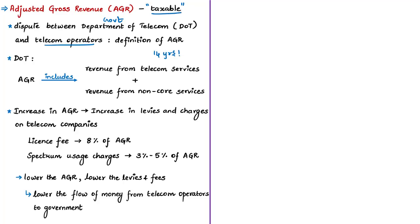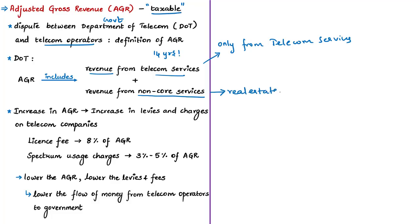Telecom companies argue AGR should comprise revenue only from telecom services, but the Department of Telecommunications argues it includes all revenue earned by a telecom operator — even those not from core telecom operations, for example earnings from rent, profit on sale of fixed assets, corporate deposits, and real estate transactions. When AGR increases, telecom operators have to pay more money to the Department of Telecommunications — that is why they oppose the government's wider definition of AGR.